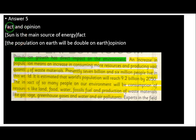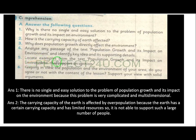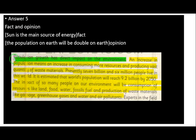Question number five: Locate examples from the text — population growth. The population growth is an example. The population growth has a direct impact on the environment. What are the reasons for the population growth? The opinion is a little more detailed — if you have supporting details.